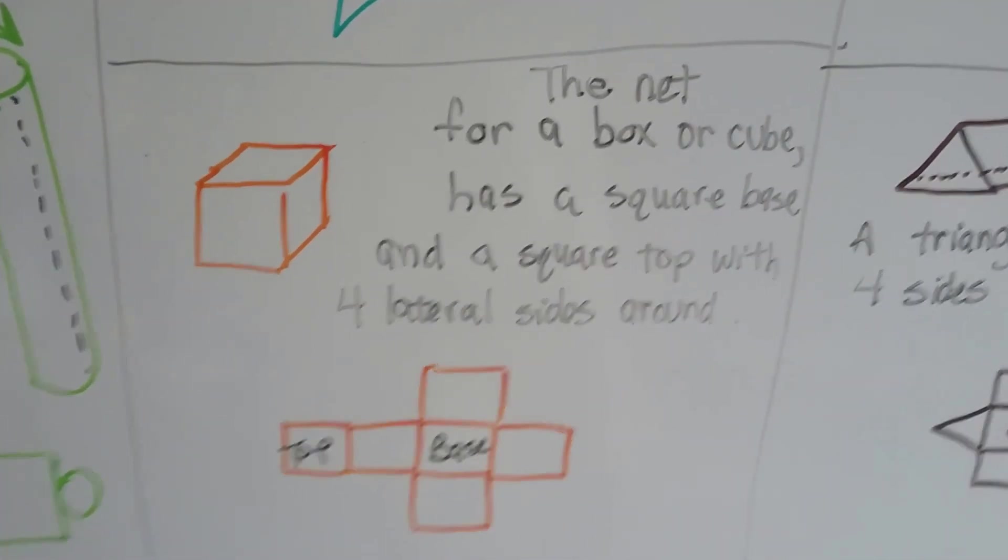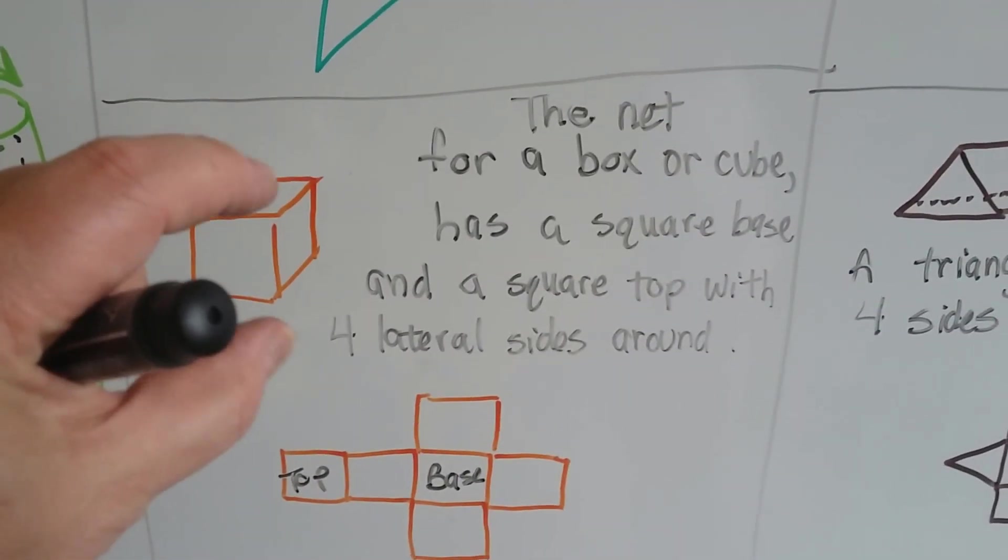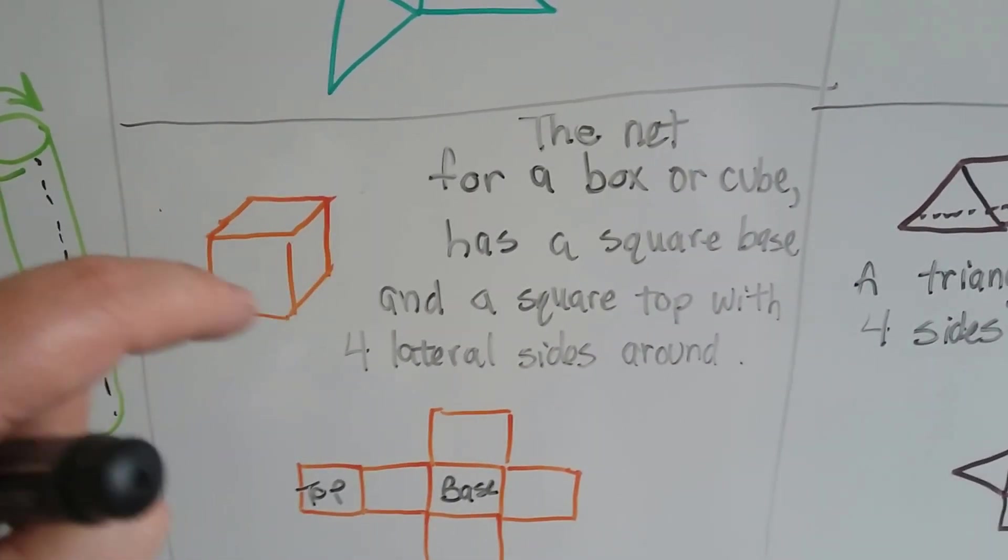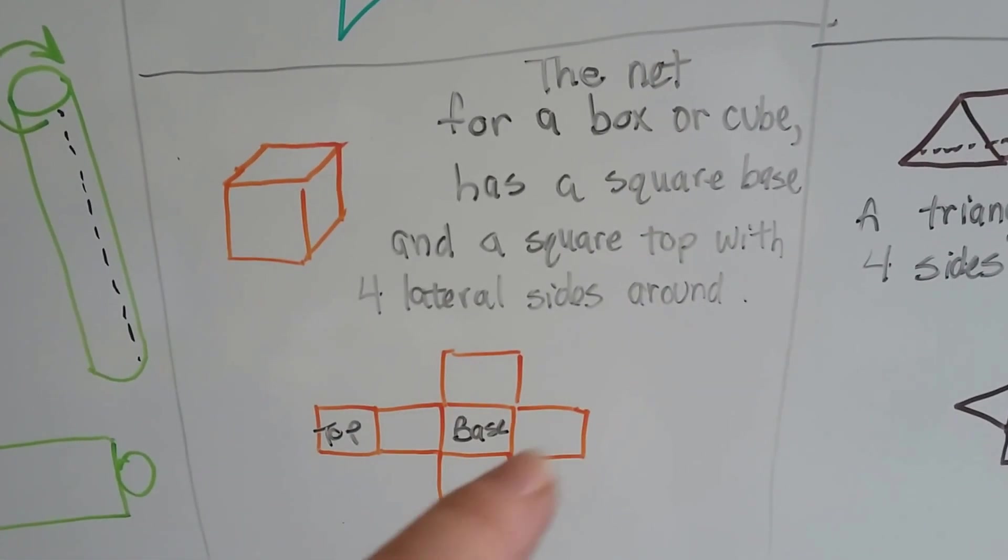The net for a box or a cube has a square base that it's sitting on. And it's got base one and base two, the top and the bottom. And then it's got four lateral sides. One, two, three, four sides that can fold up.